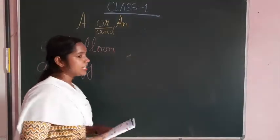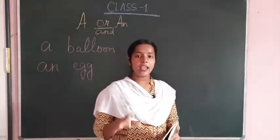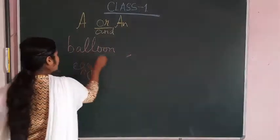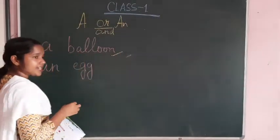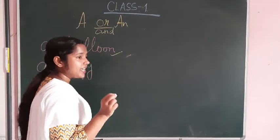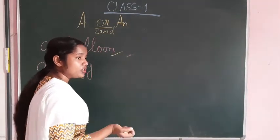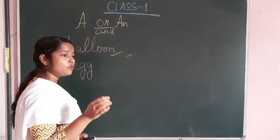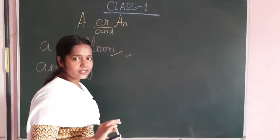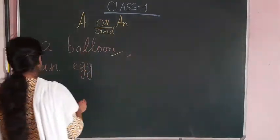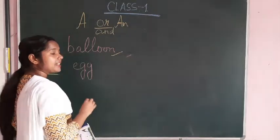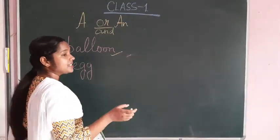Now let us start the chapter. What is it? A or An. I have written an example over here: a balloon. When we write a sentence, there are such articles, prepositions or adjectives that have to be used. Why? To make a complete sentence. Now we are using A or An over here to make that sentence complete.